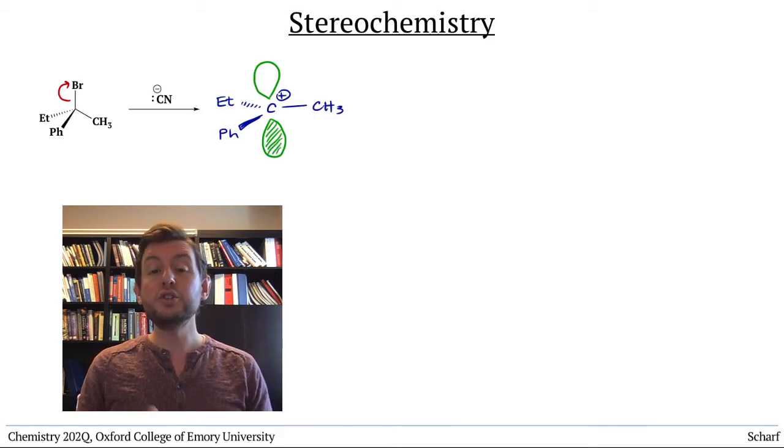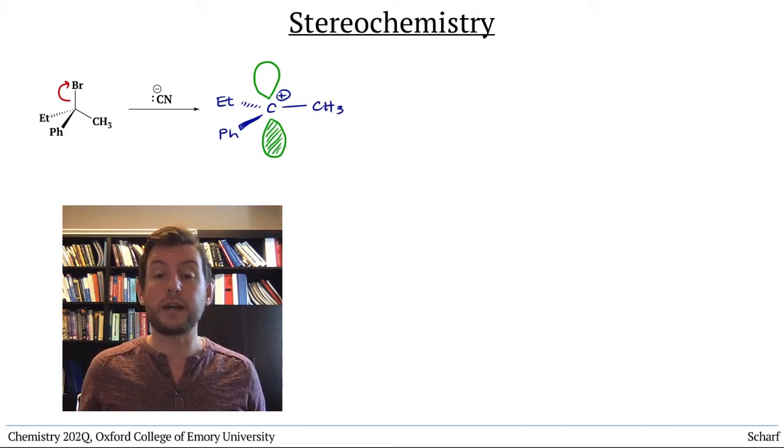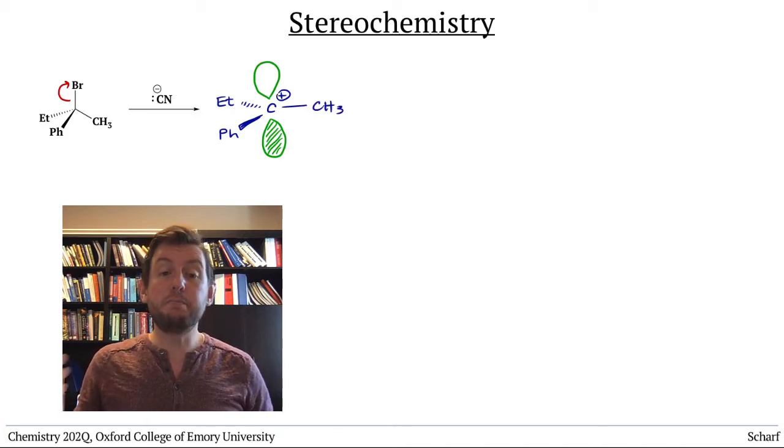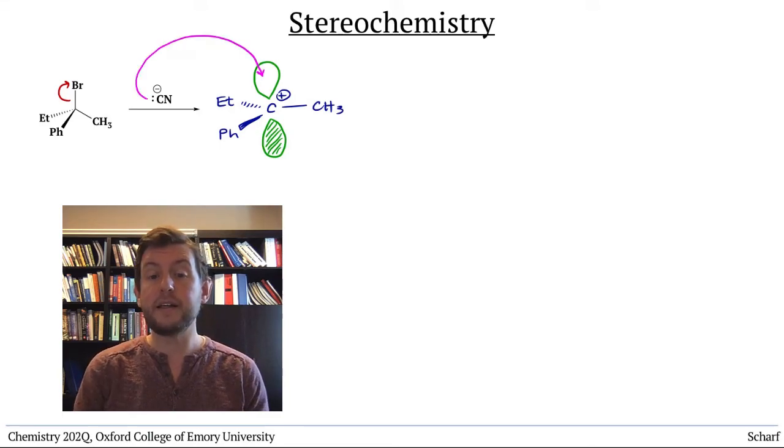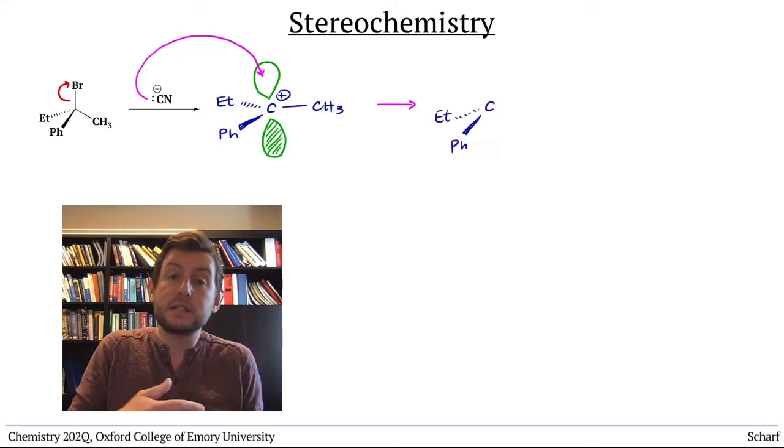The nucleophile has two choices for where it can attack. Since both lobes of this P orbital are equal in size, the nucleophile has no preference for attack from one side or the other.